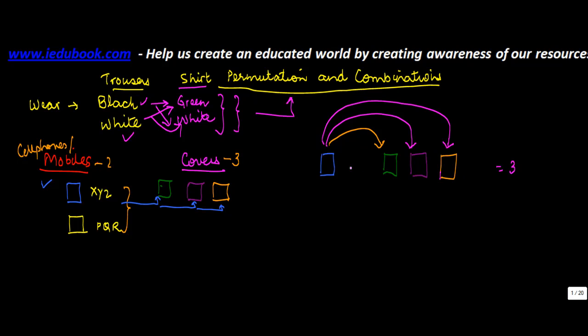So there are three ways in which this particular mobile can be used. Similarly, if you use the mobile of PQR brand, it can also go with green color, purple color, or orange color. So again there are three ways. When you do the sum of these, there are six ways in which this person can cover their cell phone.